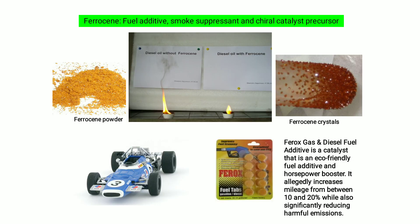Ferrocene is also called a fuel additive, smoke suppressant, and chiral catalyst precursor. It is found in both powder and crystal form. Ferox, a gas and diesel fuel additive and eco-friendly catalyst and horsepower booster, allegedly increases mileage by 10–20% while significantly reducing harmful emissions.